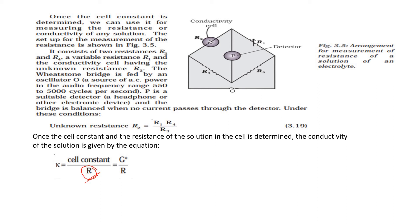We need to calculate the resistance of the solution to find conductivity. The circuit consists of resistances R3 and R4, which are predefined, and R1. We calculate the unknown resistance R2 by multiplying R1 and R4 and dividing by R3. In this way we can calculate R2, and this is how the measurement of conductivity is done.